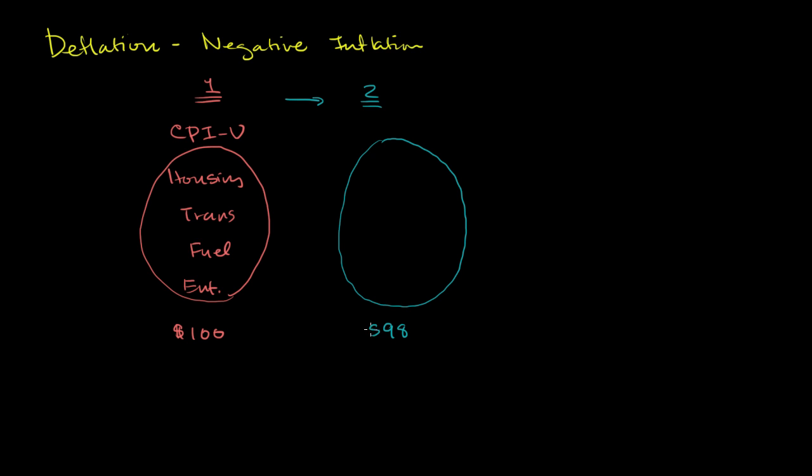that same basket of goods is now running at $98. So the total cost of goods and services for this average consumer has gone down by $2. We could say that we've experienced negative 2% inflation, which is really just another way of saying that we have experienced deflation.